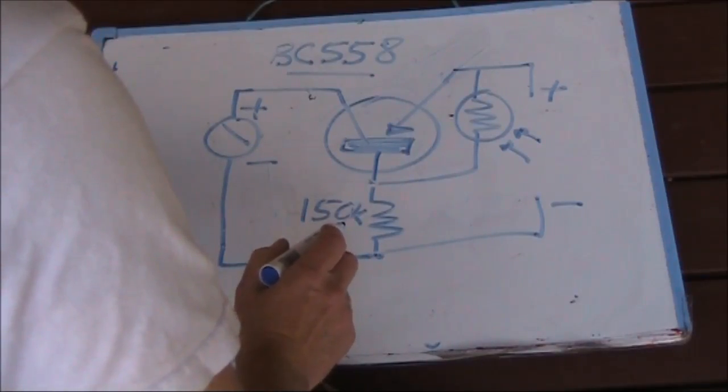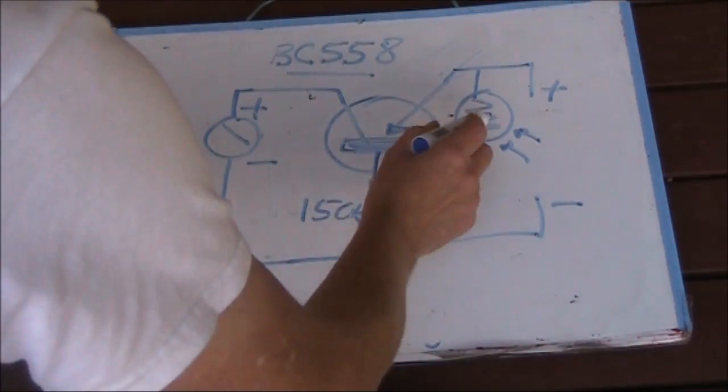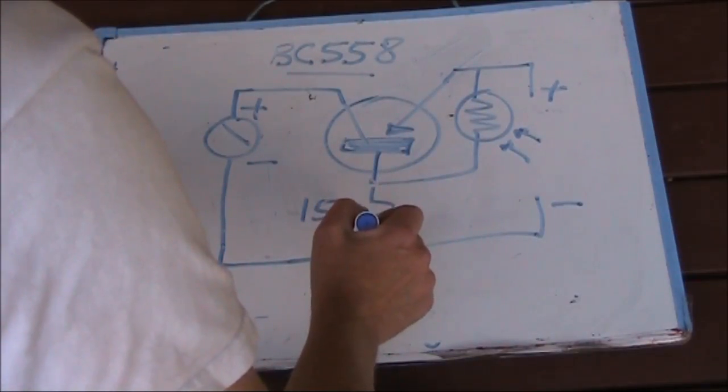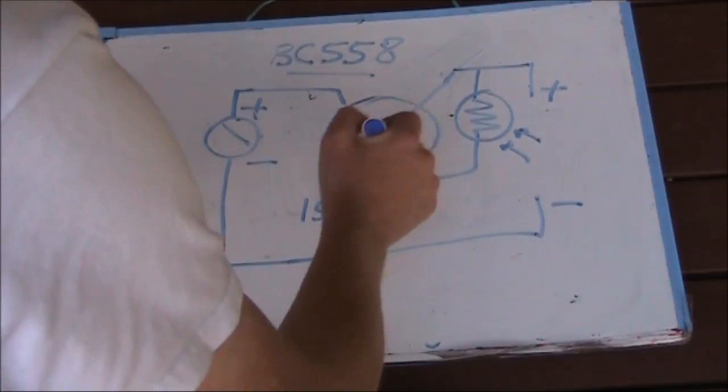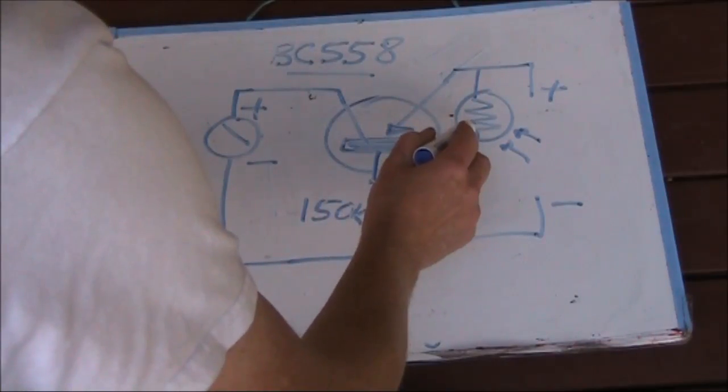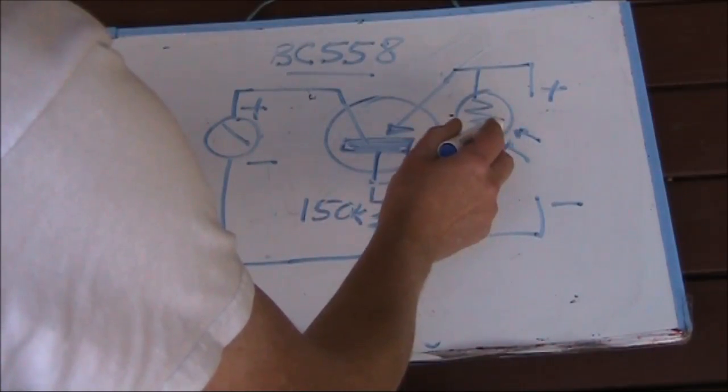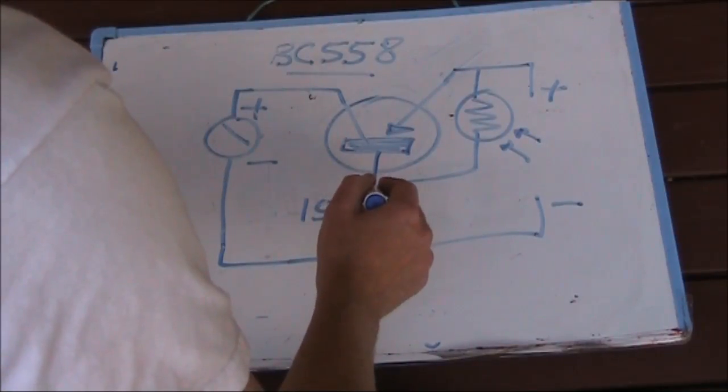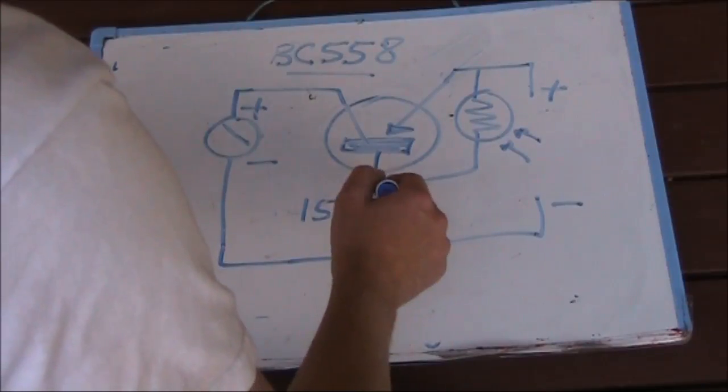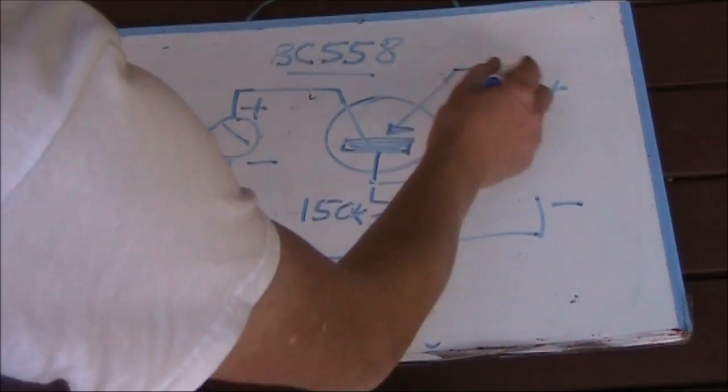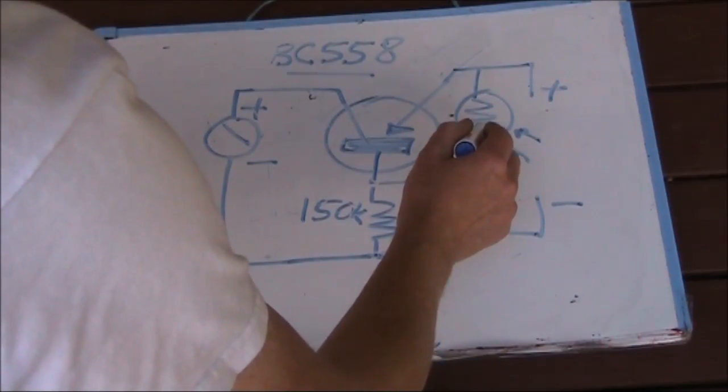The idea of this is that in the dark, the LDR is high resistance, so it might as well not be there. But the resistor here is sufficient to pull the base down and thus activate the transistor and sound the buzzer. Whereas when it's bright, the LDR here is low resistance, only a few kilo-ohms, and this 150K resistor is pretty much ignored. It's not enough to pull the base voltage down very much, as it's held tightly up to the emitter, or the supply voltage, by the low resistance of this LDR.